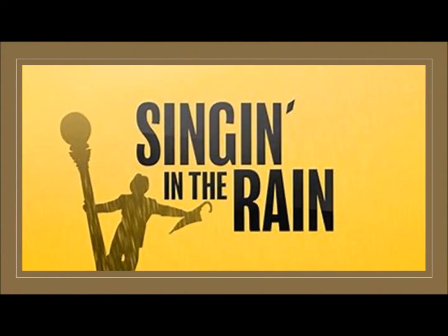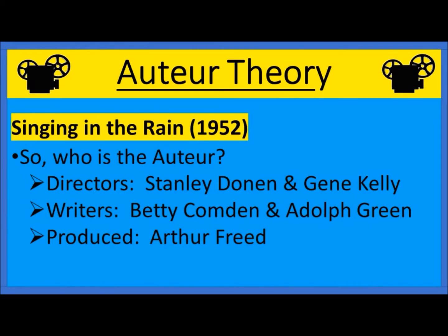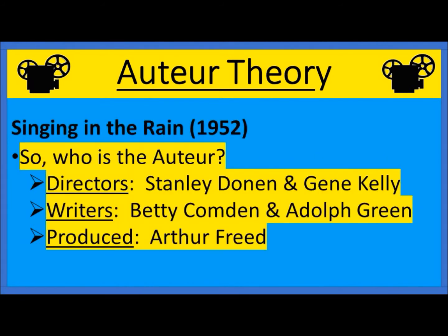As the teacher went on to explain, the movie we were talking about was Singin' in the Rain. His point with Singin' in the Rain was that it had two directors — so who was the auteur in that? It also had two different writers, and the producer was Arthur Freed. The question was: who had the most control over that film to make it what it is.